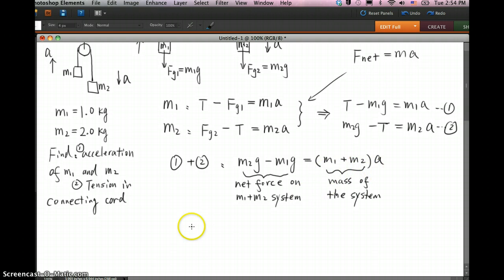So then we can isolate the A. A is going to be M2g minus M1g divided by M1 plus M2. And if you plug in, you should get 2 times 9.8 minus 1 times 9.8 divided by 2 plus 1. And this one should equal 3.27 meters per second squared.